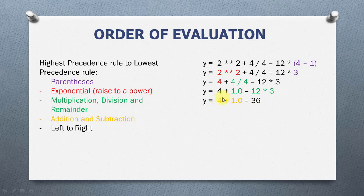Python will do addition first before subtraction because we're moving from left to right and the addition operator comes first. So, if we are adding 1.0 to 4, we're going to get 5.0. So, 5.0 minus 36 will give us minus 31.0. And Python will now store this value minus 31.0 into the variable y.